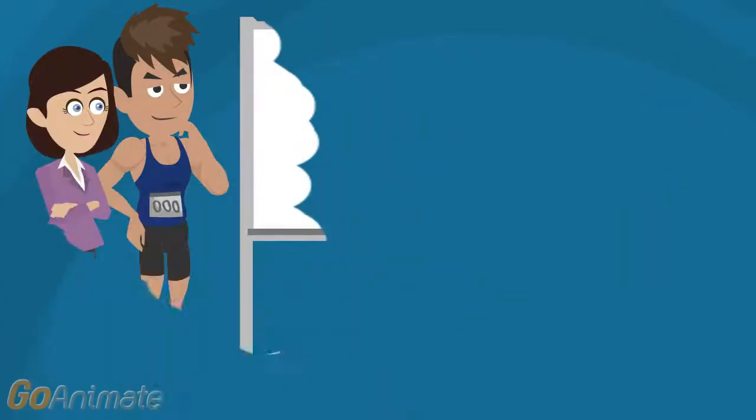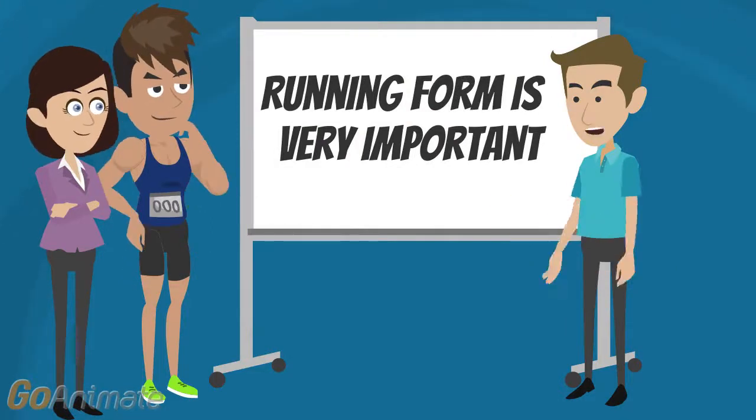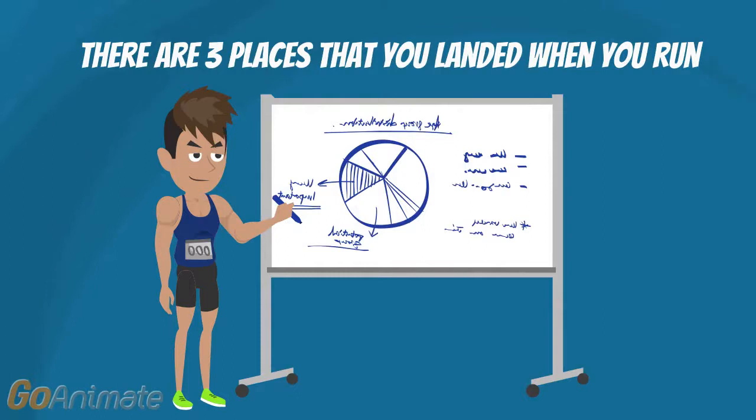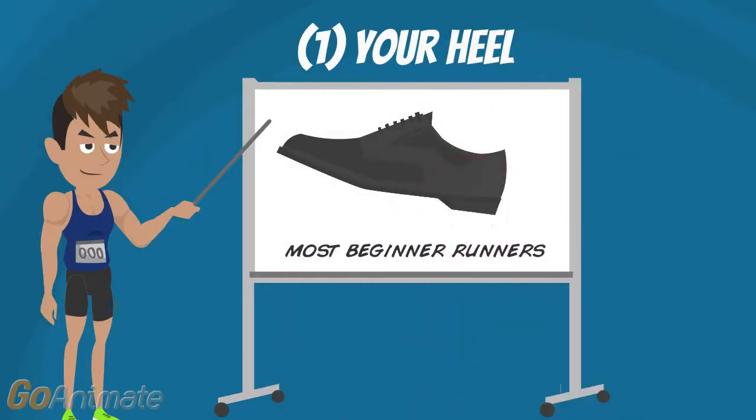Running form is very important. Running can do damage to your joints, especially if you are not concentrated on where you are landing. In general, there are three places that you land when you run. Number one, your heel. In general, most beginner runners are doing this, meaning when their foot hits the ground, their heel is the first part of their body to make contact.